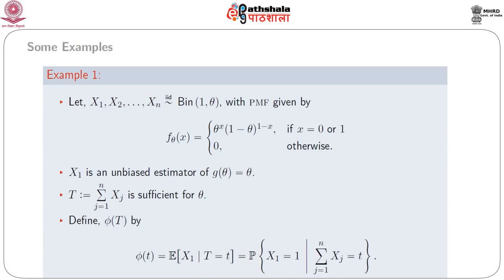Now we consider some examples. In the first example, suppose x₁, x₂, …, xₙ are iid Binomial(1, θ) random variables. The PMF is f_θ(x) = θ^x (1−θ)^(1−x) if x = 0 or 1, and 0 otherwise. Here g(θ) = θ. Clearly x₁ is an unbiased estimator of g(θ). We know that T = Σⱼ₌₁ⁿ xⱼ is sufficient for θ since f_θ(x) belongs to the one-parameter exponential family.